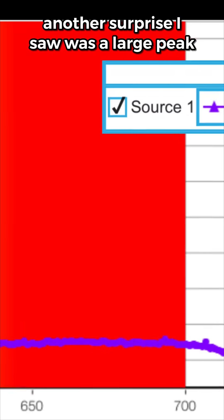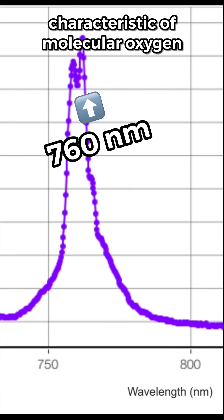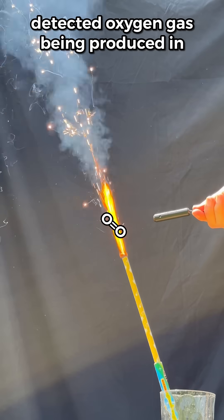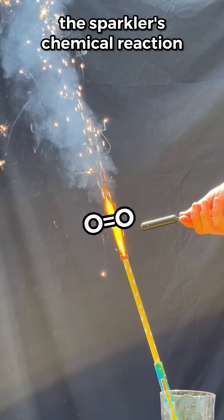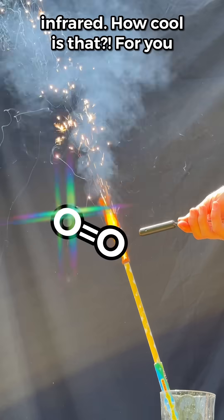Another surprise I saw was a large peak in the infrared at 760 nanometers. That's characteristic of molecular oxygen emission. The spectrometer detected oxygen gas being produced in the sparkler's chemical reaction, being heated and glowing in the infrared. How cool is that?